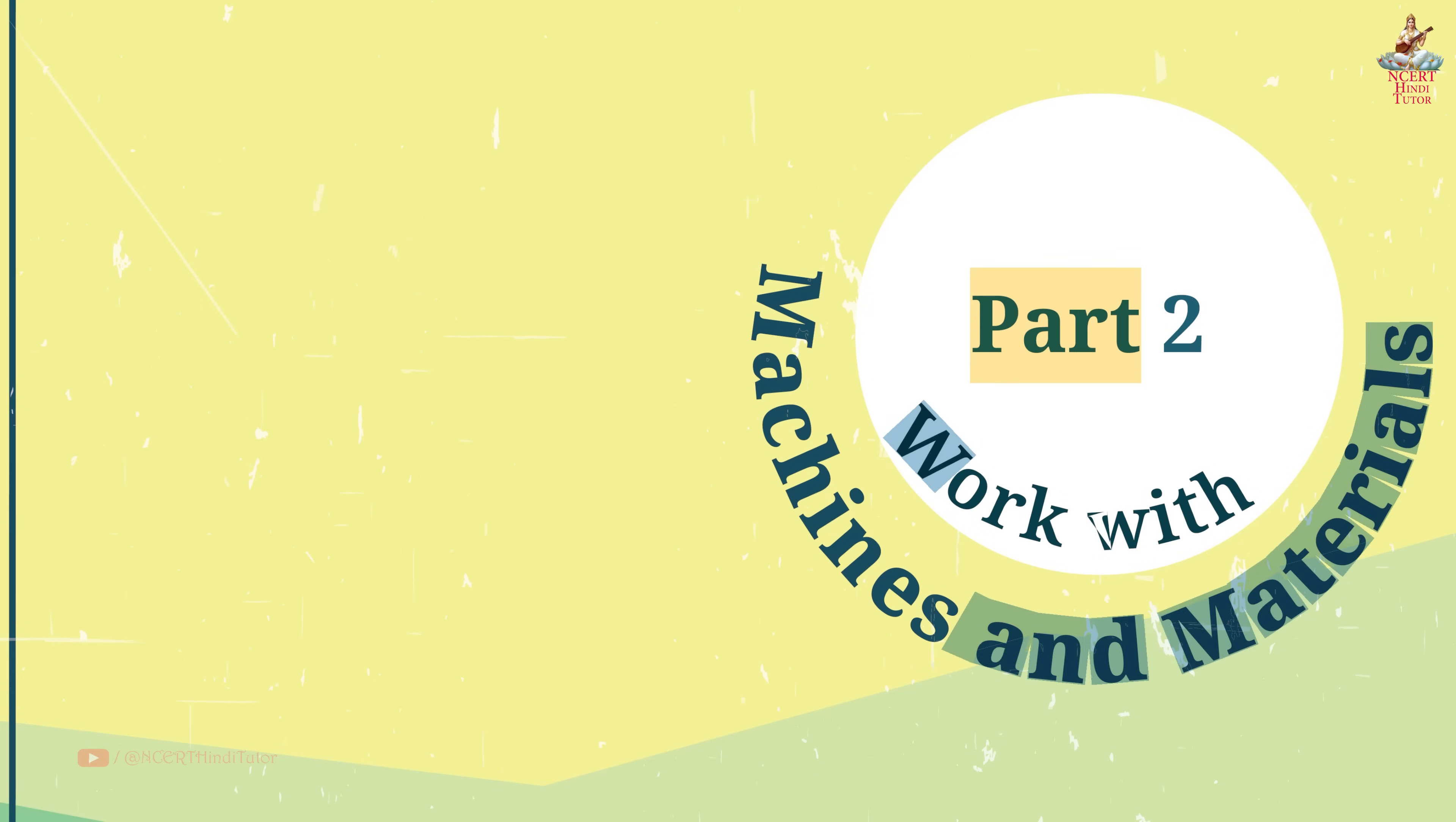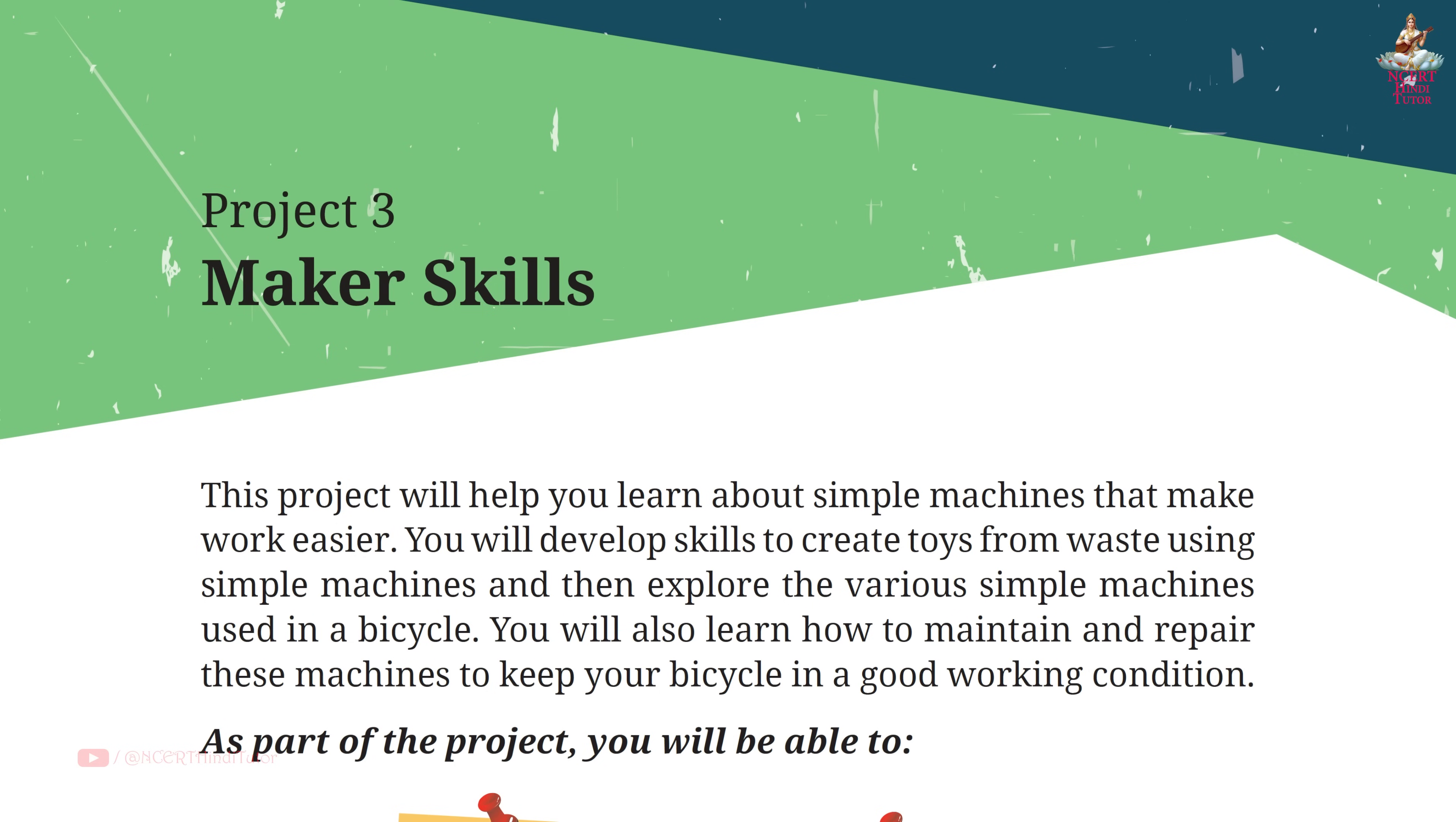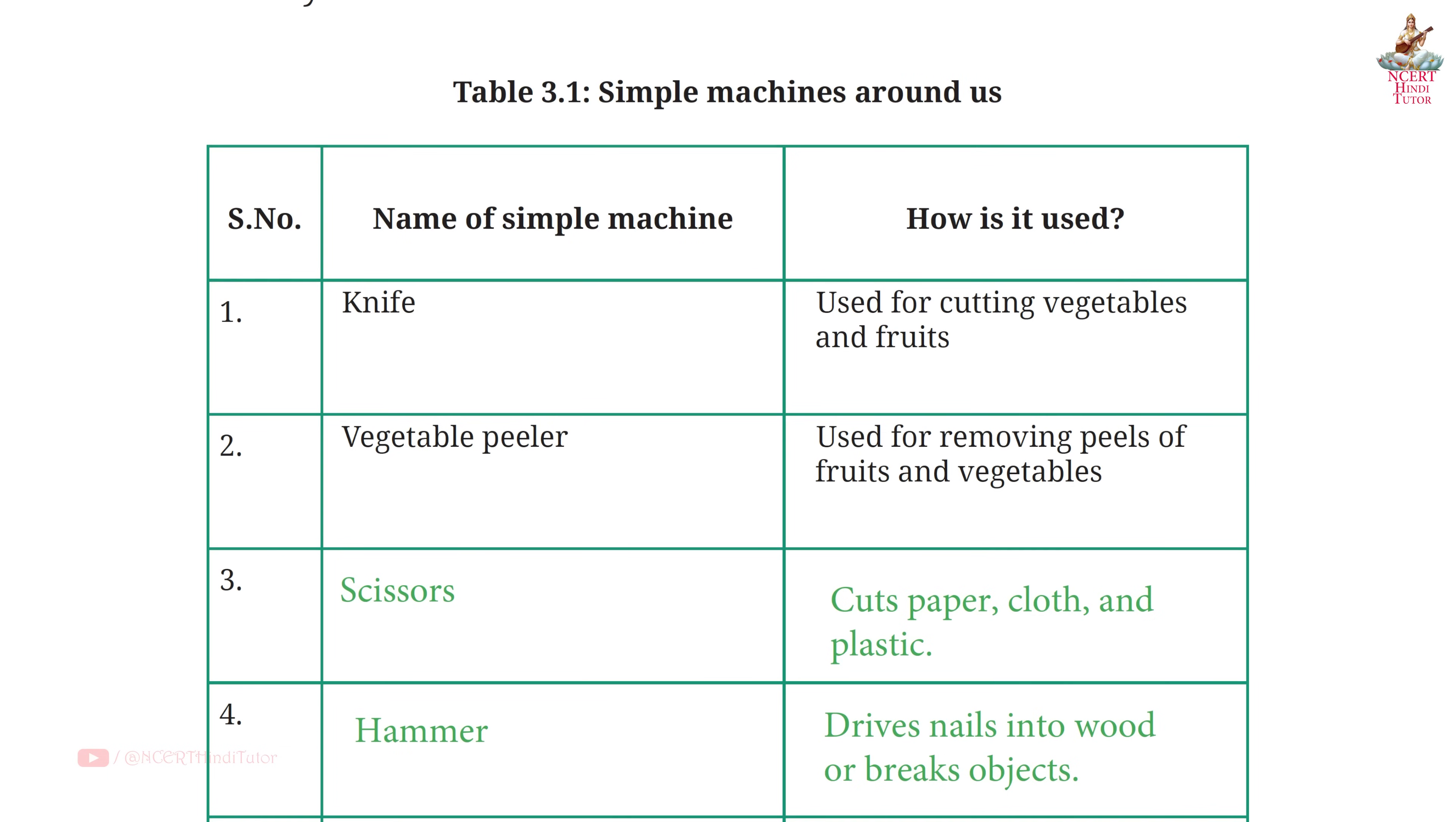Part 2, Work with Machines and Materials, Project 3, Maker Skills, Question Answers from Class 6 Subject Vocational Education Book, Kaushal Board. Page 61, Table 3.1, Simple Machines Around Us. Name of simple machine: Knife. How is it used?